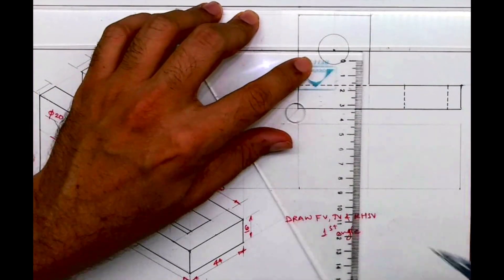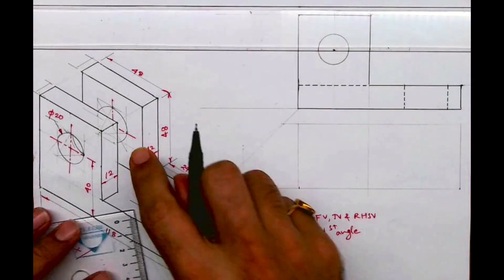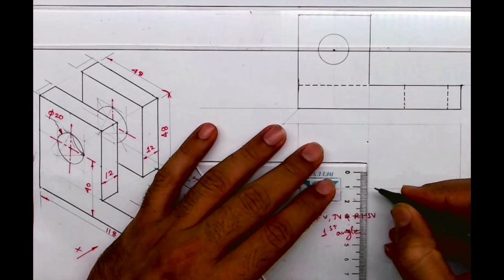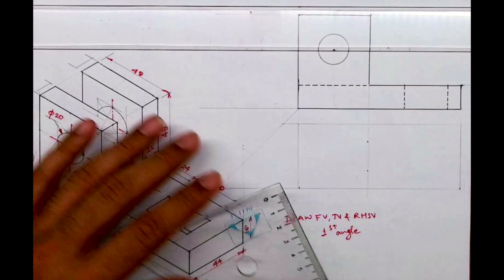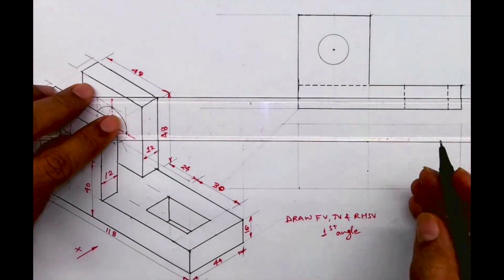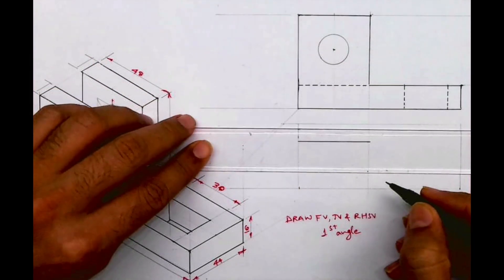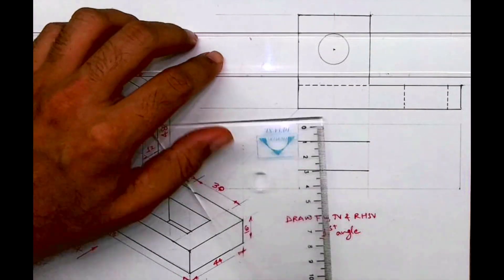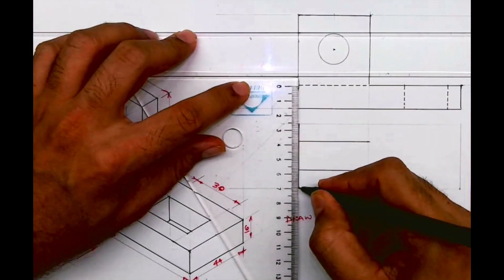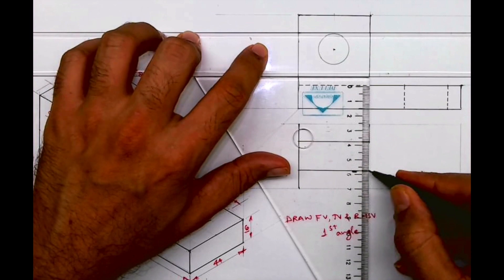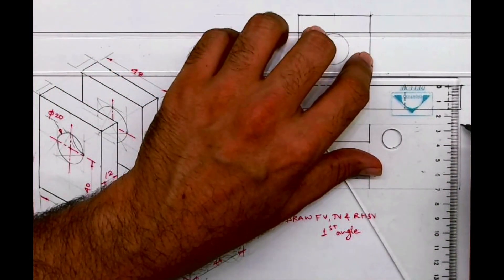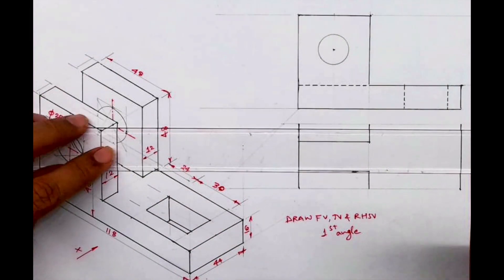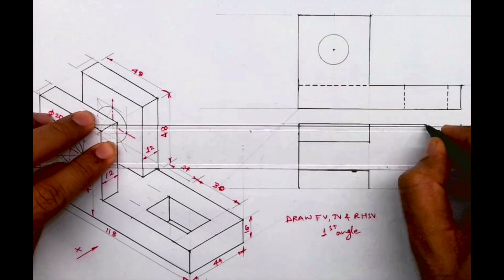Now we need to draw the top view, so we'll project this. This is 12, 12, 12, and we'll draw rectangles. This will be fully dark. We got two rectangles, and the entire rectangle will be dark.